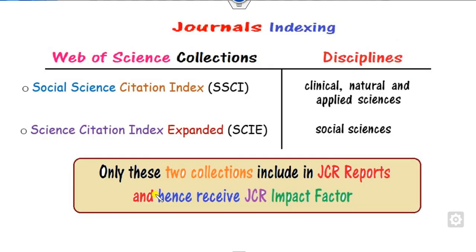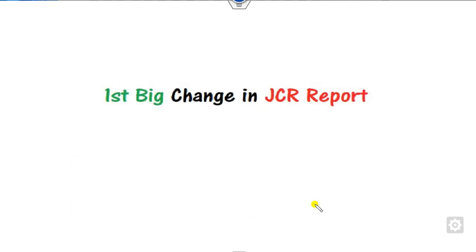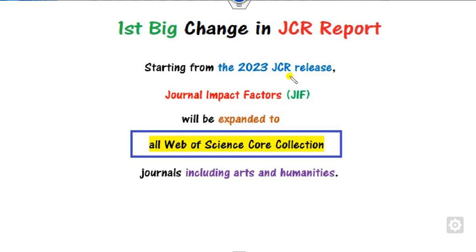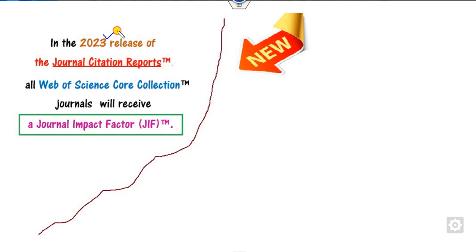Up to June 2022, only the SSCI, which consists of social science articles, and the SCIE, which consists of applied and natural sciences, received the JCR impact factor. But now, starting from June 2023, whenever the JCR releases their impact factor, they will extend it to all the Web of Science collections — meaning arts and humanities will also be included. This major announcement was recently made by the Web of Science core collection.